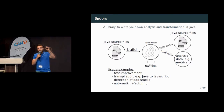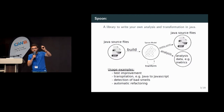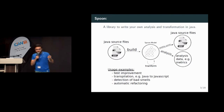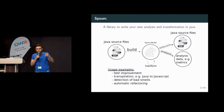Each node of this tree is an element of the Java source files. So for instance, I will have a node for a class and its children will be the methods. Spoon, as I said, allows you to first analyze those nodes — for instance, find a specific method — and then transform it, such as removing an annotation on that method.